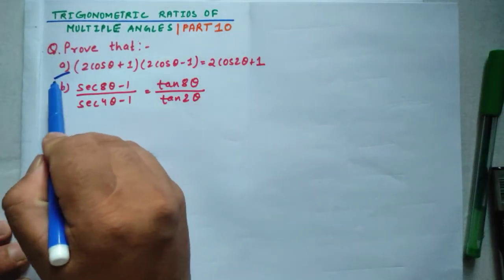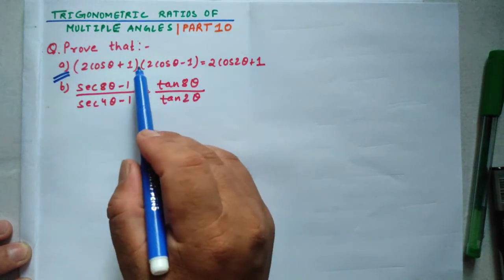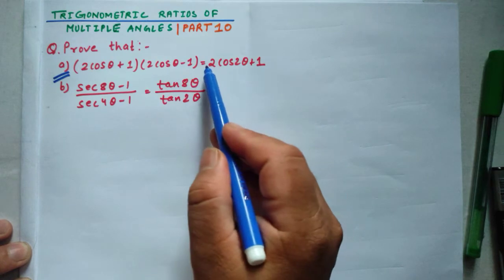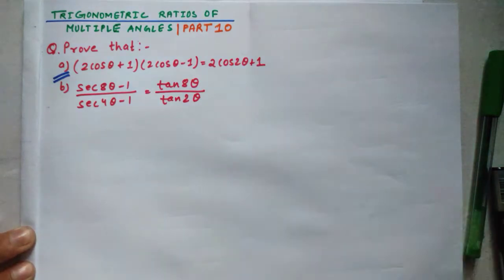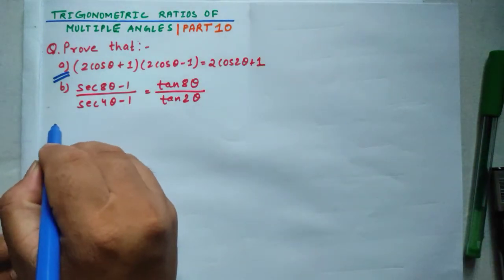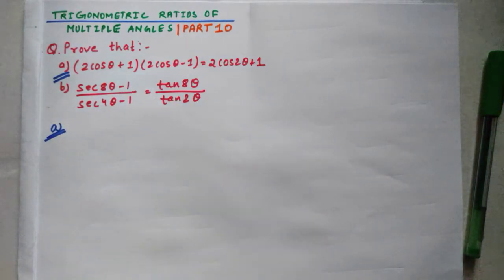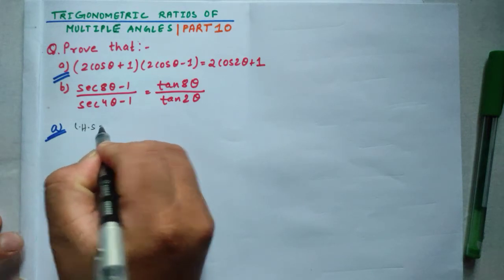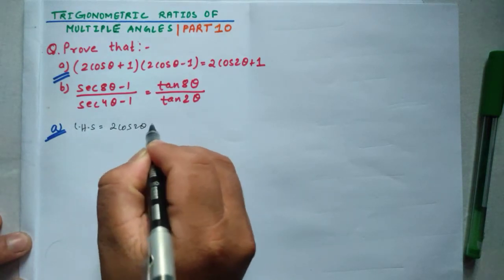Problem (a): Prove that (2cosθ + 1)(2cosθ - 1) = 2cos2θ + 1. Let's start with LHS. LHS equals (2cosθ + 1)(2cosθ - 1).